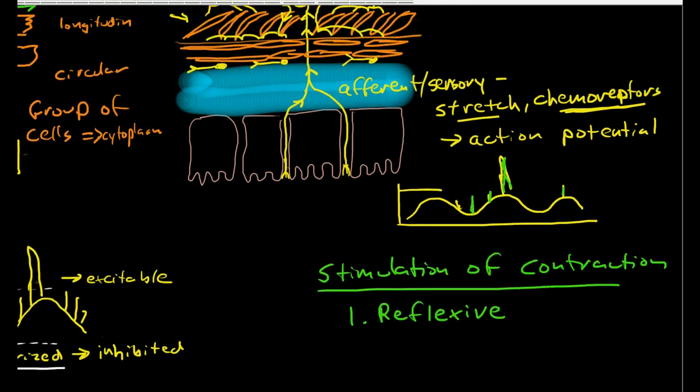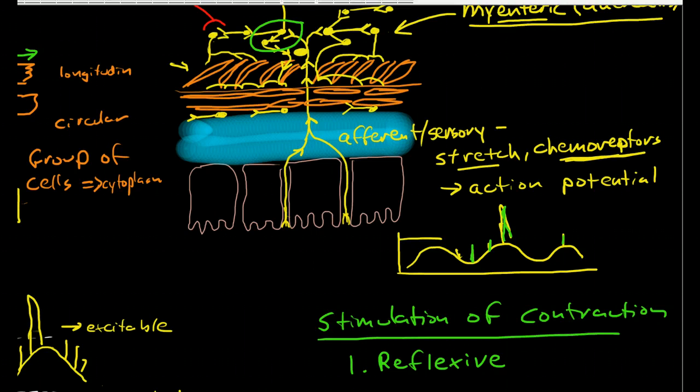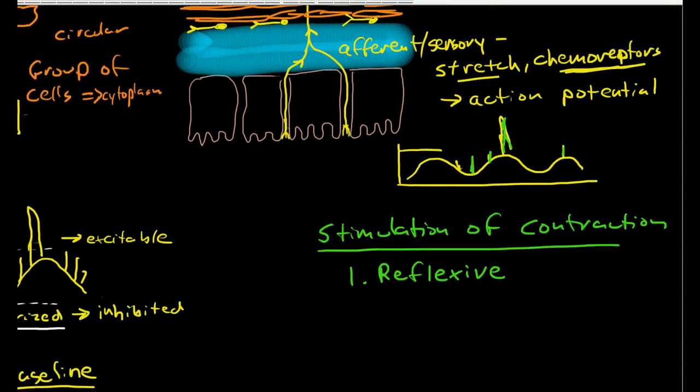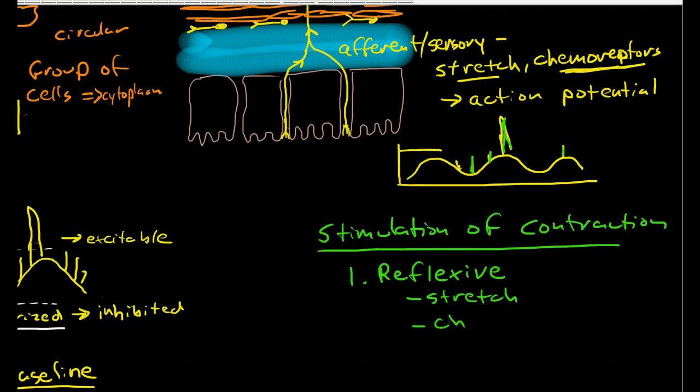Stimulation will occur from reflexive action. That means it does not involve the central nervous system at all. It is just a communication between the afferent nerves and efferent nerves, and it's coordinated by the interneurons. These reflexive actions are again stimulated by stretch or chemoreceptors.